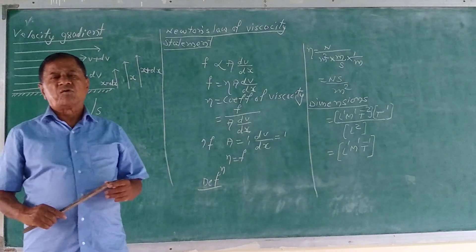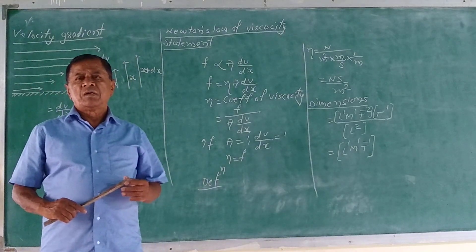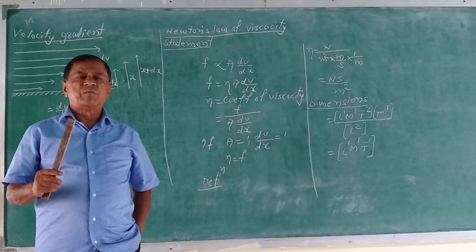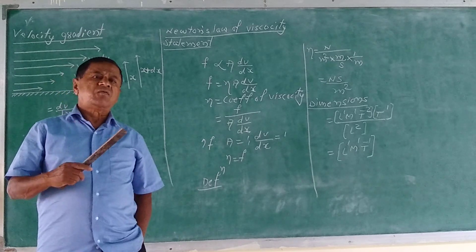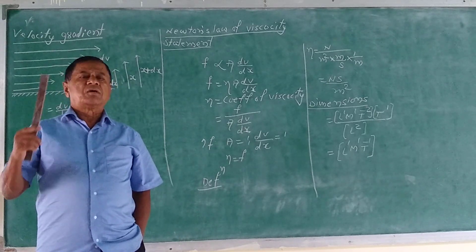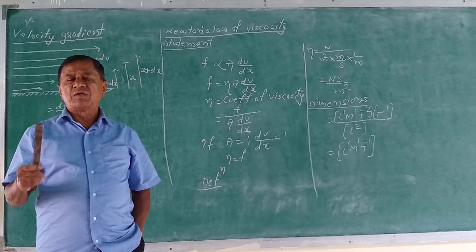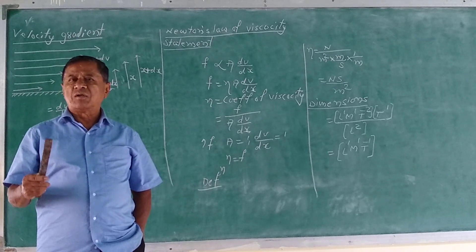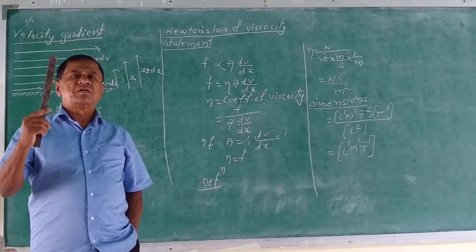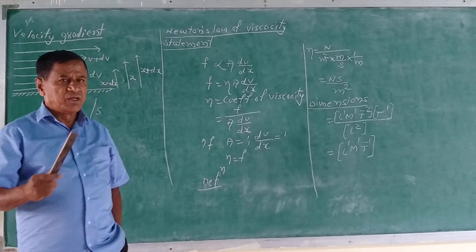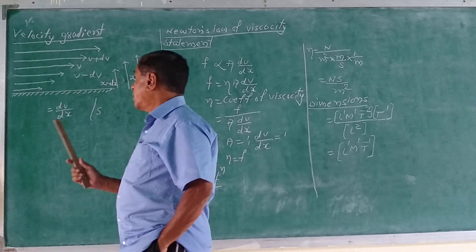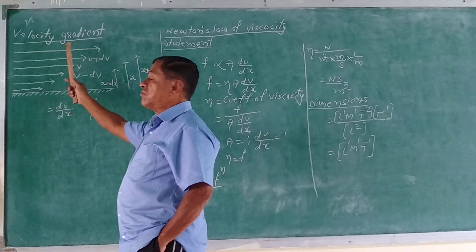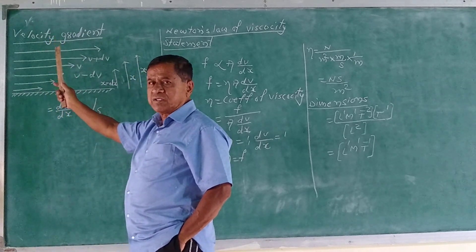In viscosity, in streamlined flow, the different layers of the liquid are moving with different velocities. The layer at the bottom has zero velocity, and the velocity goes on increasing with the increase in distance from the lower surface. These are the different layers at different heights of the liquid.